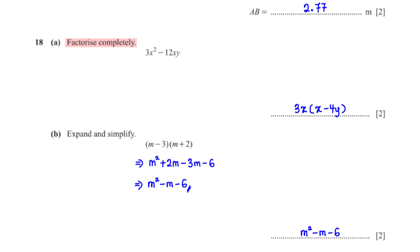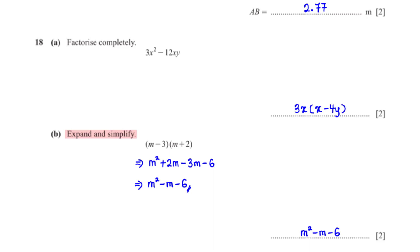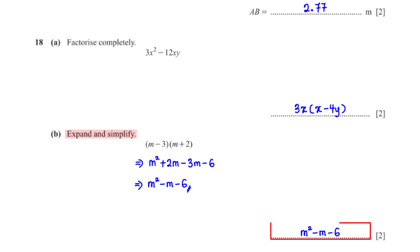Factorise completely 3x² − 12xy. The terms have a common factor of 3x, so factoring out gives 3x(x − 4y). Next, expand and simplify (m − 3)(m + 2): m × m = m², m × 2 = 2m, −3 × m = −3m, −3 × 2 = −6. Collecting like terms: 2m − 3m = −m, giving m² − m − 6.